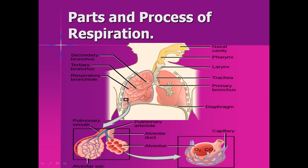The parts include the nostrils and the nasal cavity. The nasal cavity is connected with the pharynx. Then there is a pipe called the trachea, or windpipe. This trachea divides into two branches called bronchus — the plural being bronchi — and each bronchus enters inside the lungs.